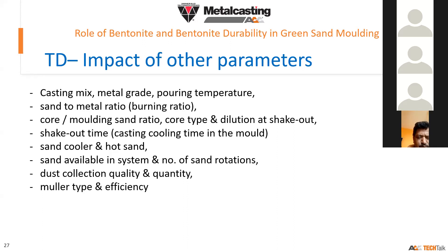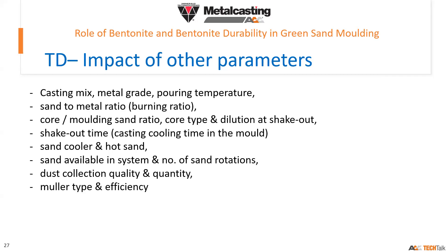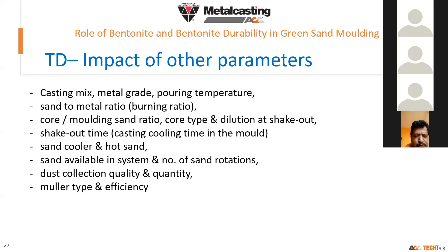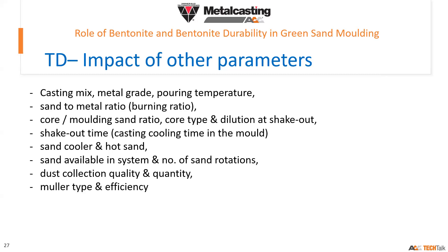Many times your sand gets cycled multiple times in a given day. Similarly, dust collection — its quality and quantity — matters. If your extraction is good and effective, a good amount of bentonite available in the sand will exit the system. If it is not reused back, the addition rate required in subsequent cycles will go up. Muller type and efficiency also matter. If your muller is not up to the mark, or your addition rate is 70–80% of actual capacity, your additive additions will naturally go up to achieve required GCS, GSS, or WTS.